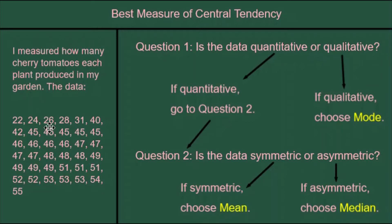And that tail is not balanced off by a long tail on the right side going with the highest numbers. So this data is asymmetric. That means I'm going to choose median. My reason? Because the data is quantitative and asymmetric.